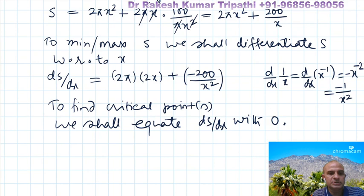Setting dS/dx = 0: 4πx − 200/x² = 0. Multiplying through by x², we get 4πx³ = 200, so x³ = 200/(4π) = 50/π.